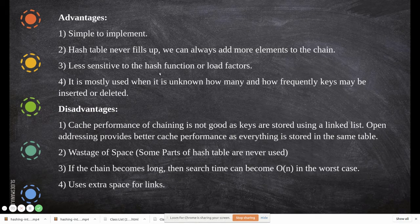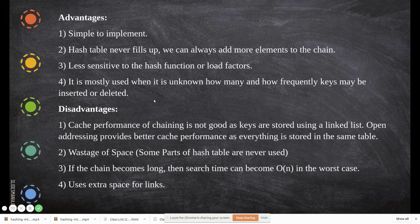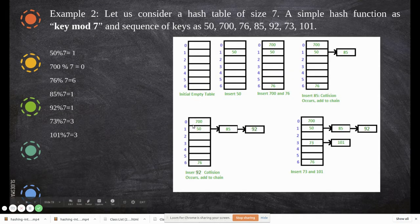Chaining is less sensitive to the hash function or load factor. Even if the same hash function generates many collisions, they can be managed using a linked list. It is mostly used when it is unknown how many and how frequently keys may be inserted - even if data keeps coming, this method handles it. In the previous cases with an array of only seven elements, you can only store seven elements; if an eighth or ninth element comes, you cannot insert. With chaining, even if only indices zero to six exist, you can keep adding even 100 elements.